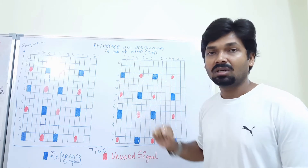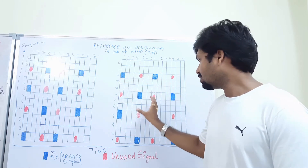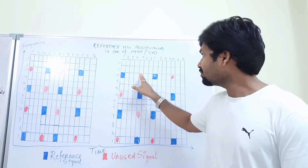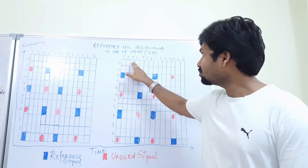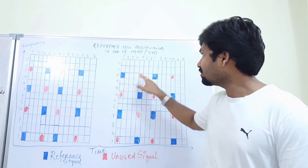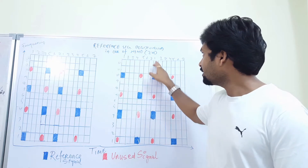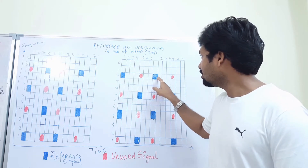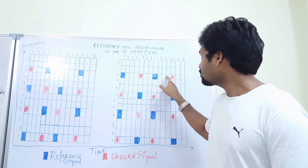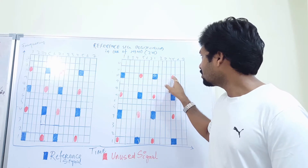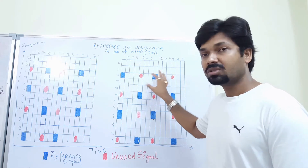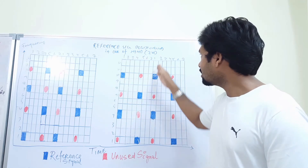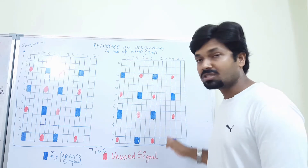Rule number two is we are transmitting either the first symbol or the fifth symbol of each resource block. Here the first, then fifth — one, two, three, four, five — this one is fifth. Then again in the second resource block, this one is the first symbol, or one, two, three, four — the fifth symbol. So only these two lines, the first symbol and the fifth symbol, are used for reference signal transmission.